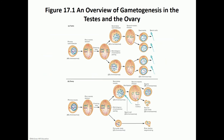Gametogenesis is the process of making either sperm, called spermatogenesis, or eggs, called oogenesis. On the top you can see the steps that lead to the formation of sperm. We start off with a primary spermatocyte that has 46 chromosomes, and we'll go through the first meiotic division followed by the second meiotic division.